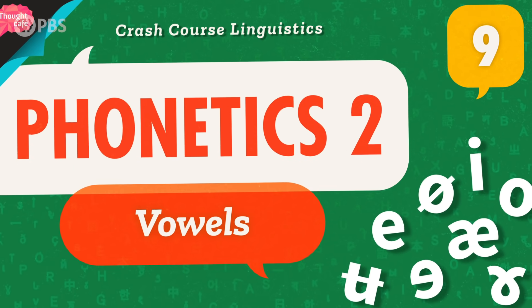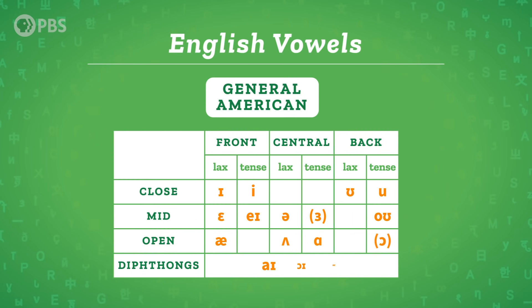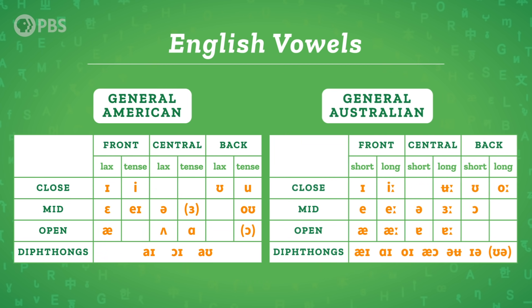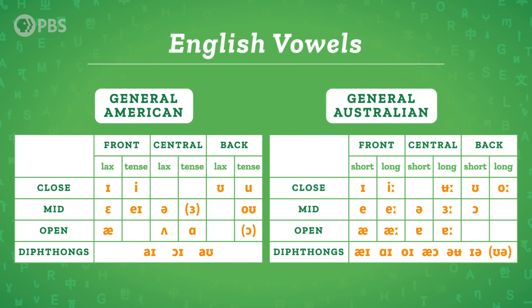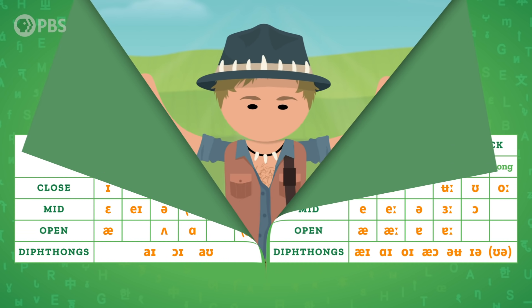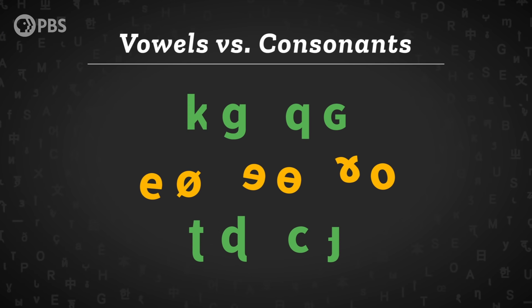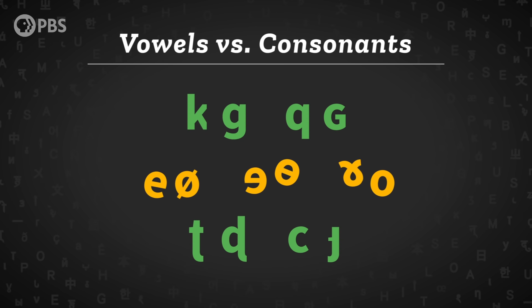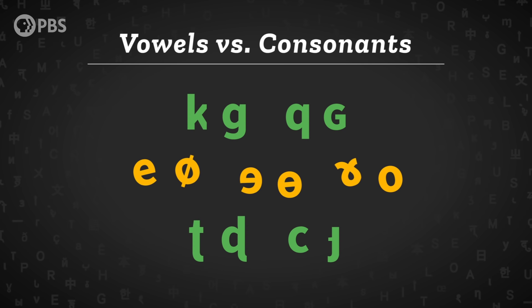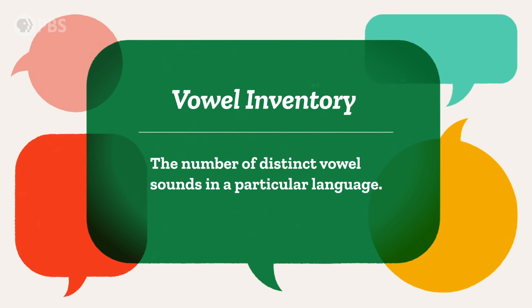Languages vary a lot in how many vowels they have. English has a large number of vowels — the number and type varies a lot between varieties of English. Most varieties have at least 16 distinct vowel sounds, but some, like Australian English, can have around 20. No wonder we need so many symbols in the IPA. Because vowels exist in an open space, it gives them more freedom to move around than consonants have, which is why vowels often stand out in different accents. A vowel inventory is the number of distinct vowel sounds in a particular language.